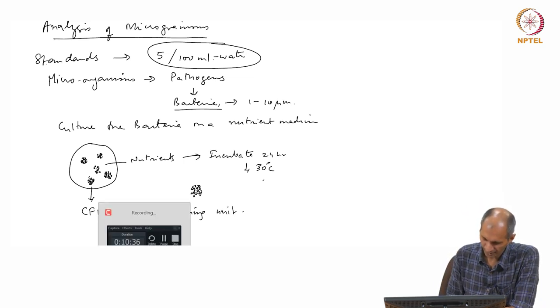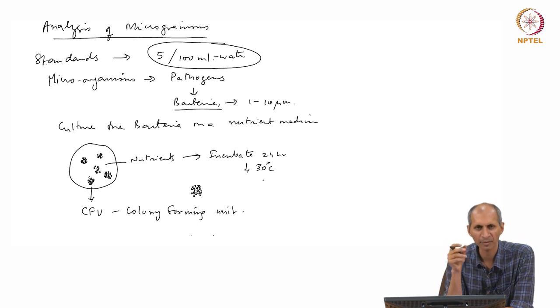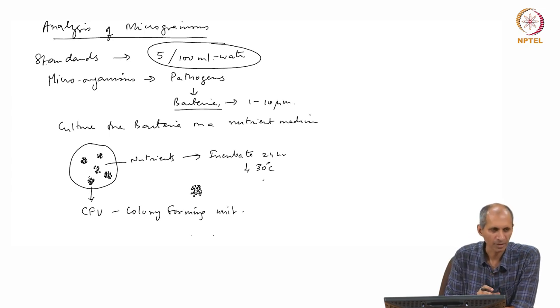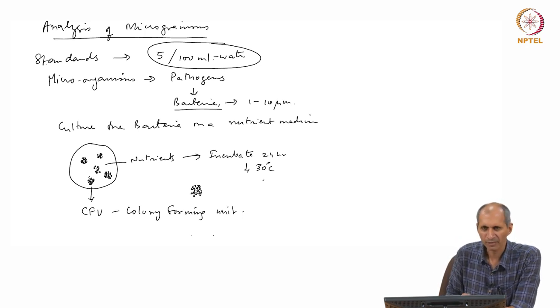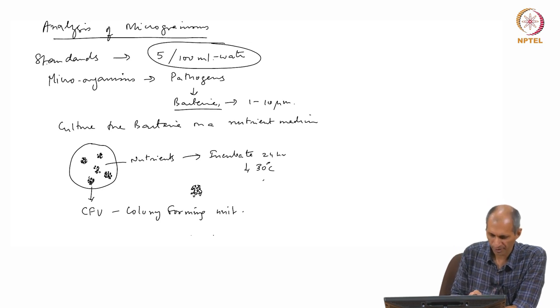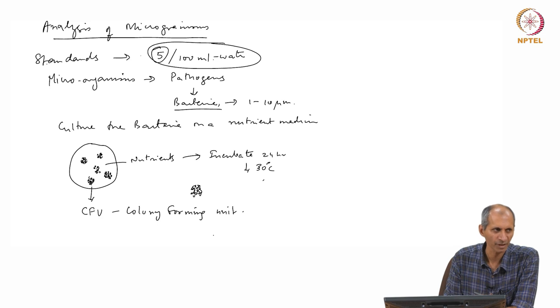This takes time, 24 hours, so you cannot get an immediate value. You have to take a water sample, put it on a nutrient medium, wait for 24 hours. Then you can see it directly or you can look at it under a microscope. This is one way. There are other ways of doing it where you can look at it under a microscope. If you are looking for small numbers such as 5, you need to do these kind of things.